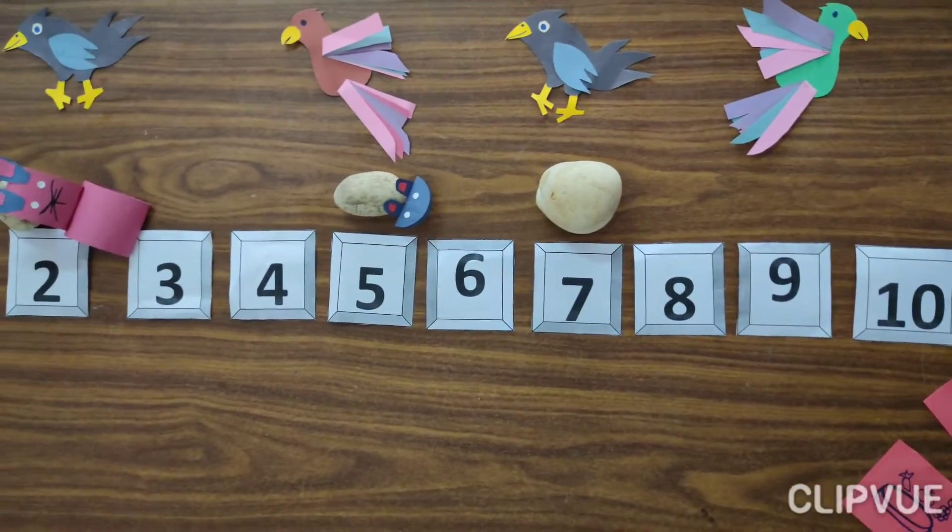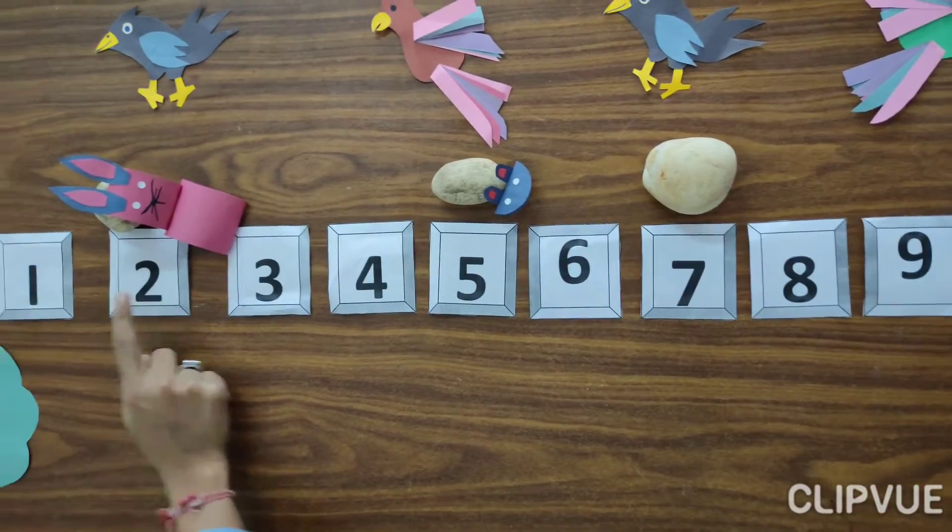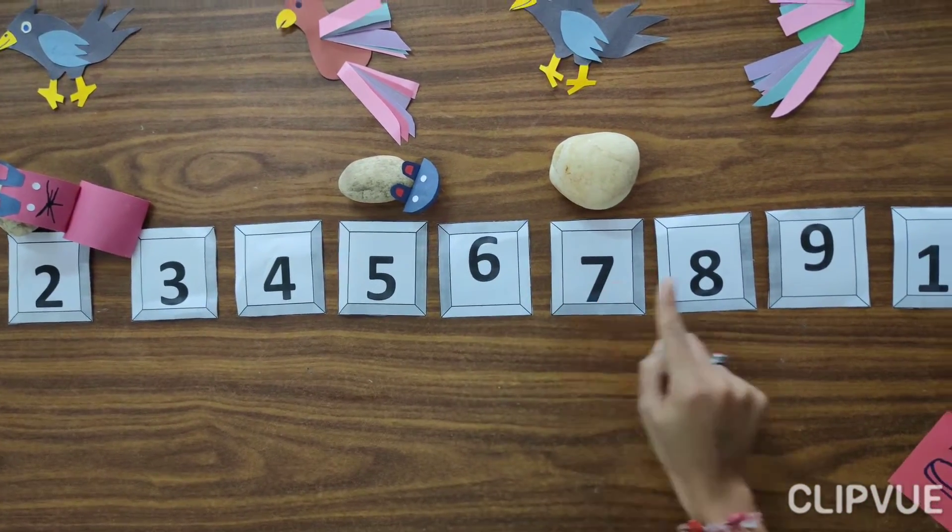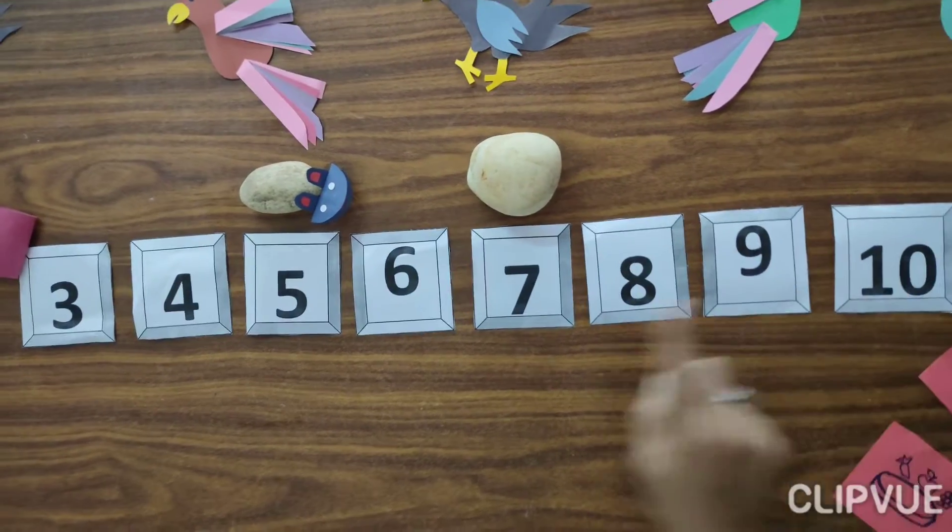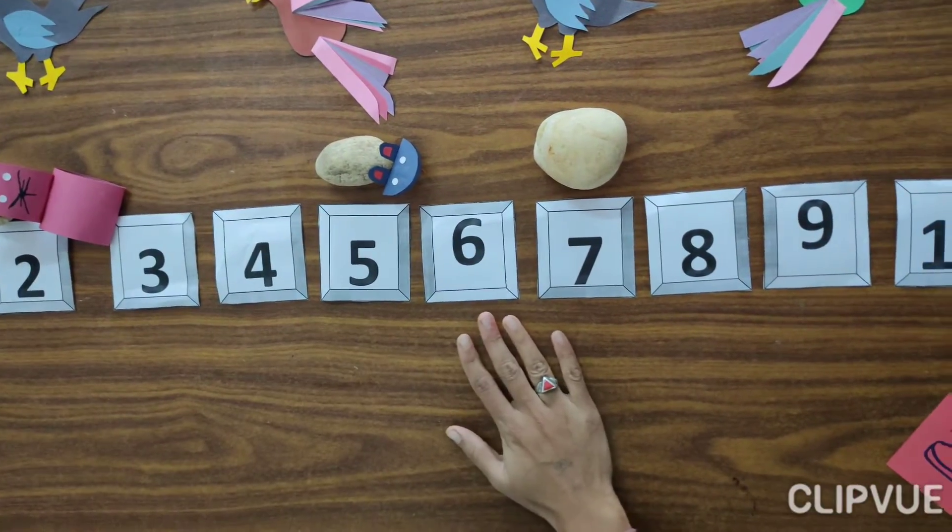Generally we do forward counting. Like 1, 2, 3, 4, 5, 6, 7, 8, 9, 10. It is called forward counting.